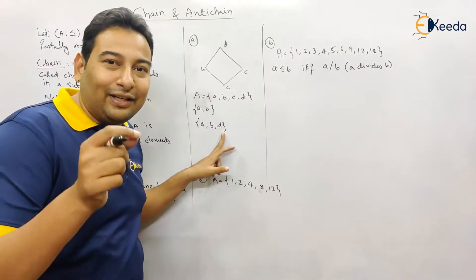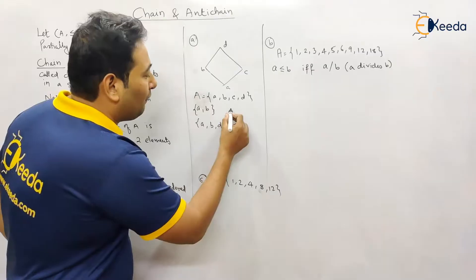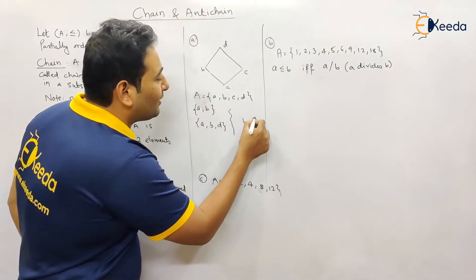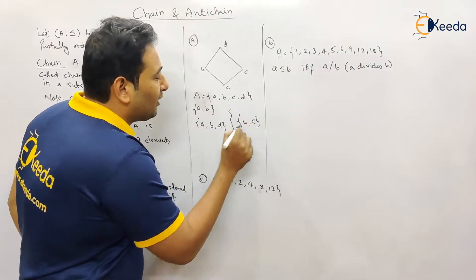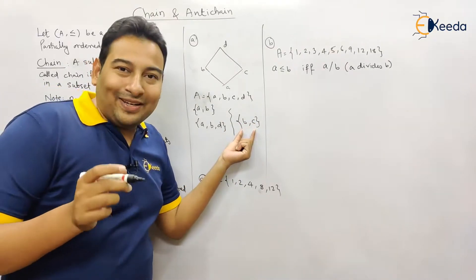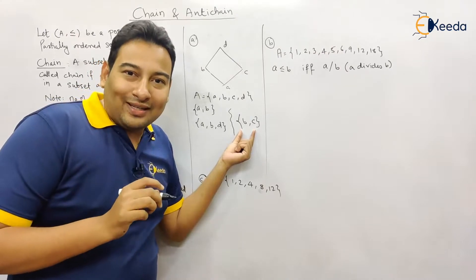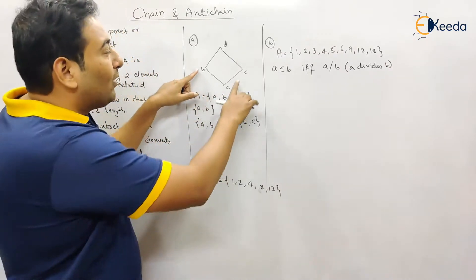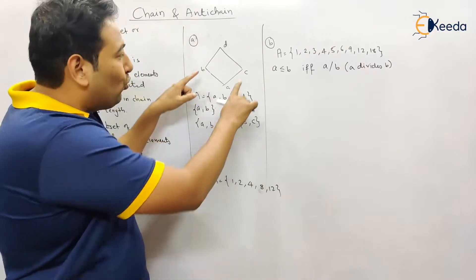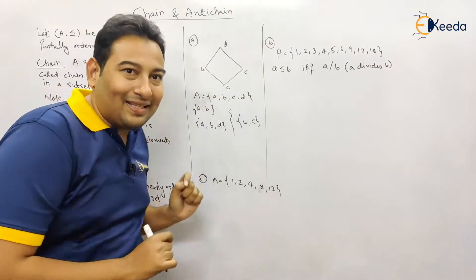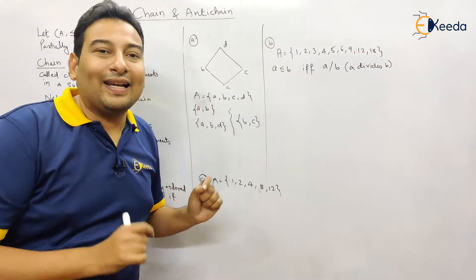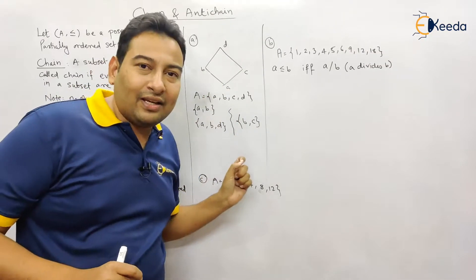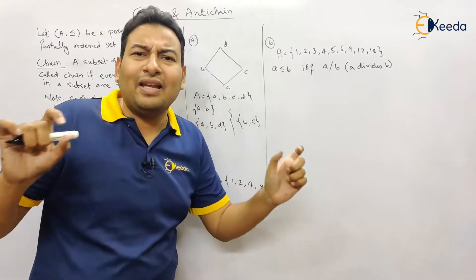I can add one more element: consider {a, b, d}. Every element of this subset is related, therefore it is called a chain. Now if I take {b, c} — there are two elements in this subset but they are not related. You cannot compare b and c; there is no connection between b and c, therefore it's an antichain.